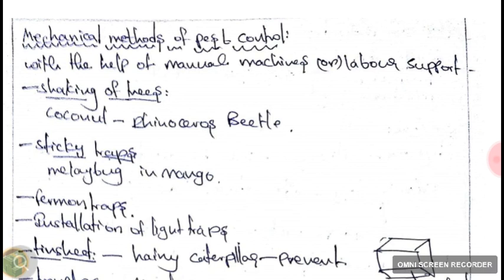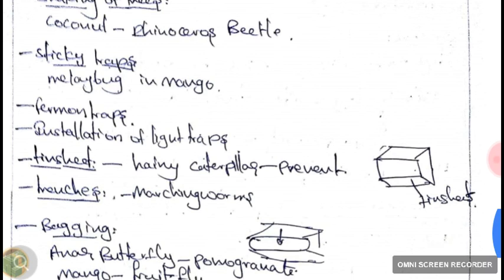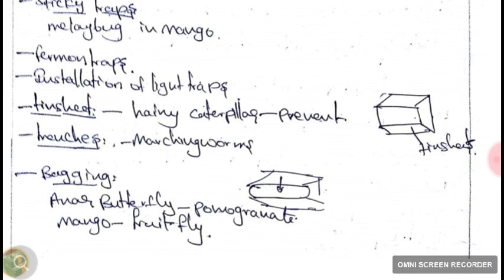For mechanical methods of pest control, using manual machines or labor: shaking of trees prevents rhinoceros beetles in coconut; sticky traps with yellow paper and gum prevent mealy bug in mango; pheromone traps can be used; installation of light traps comes under mechanical method; tin sheets prevent hairy caterpillars; trenches are made for marching worms; and bagging prevents Anna butterfly in pomegranate and fruit fly in mango.